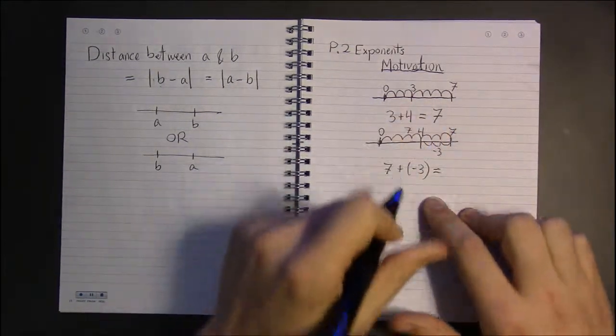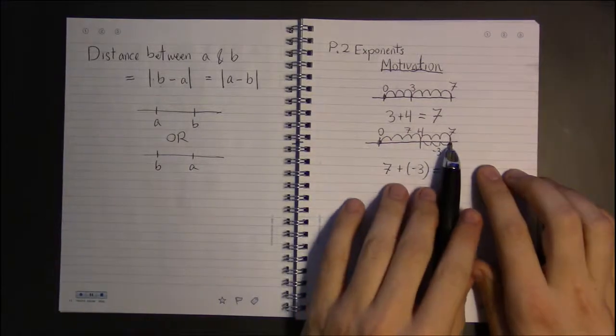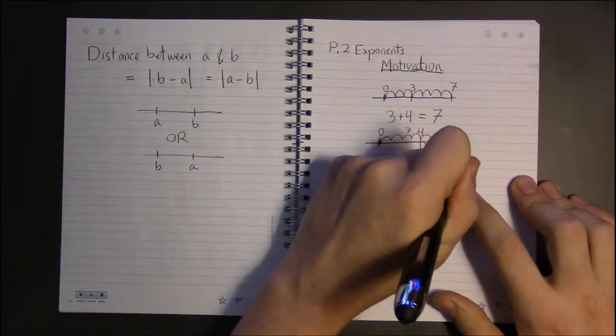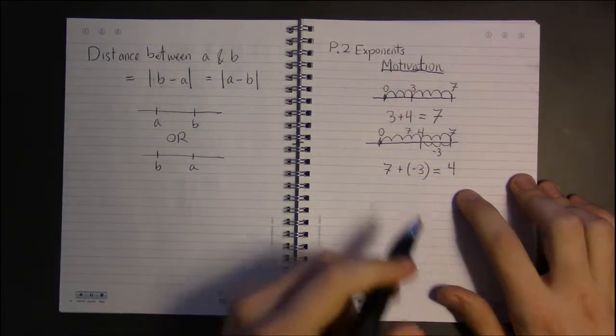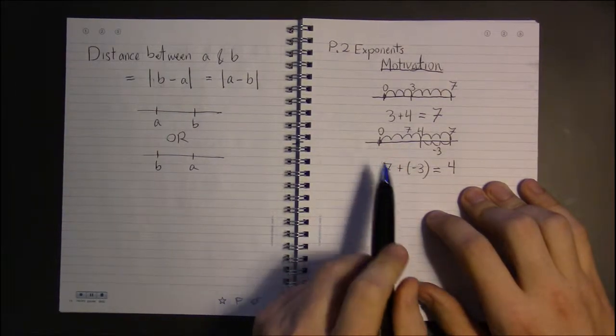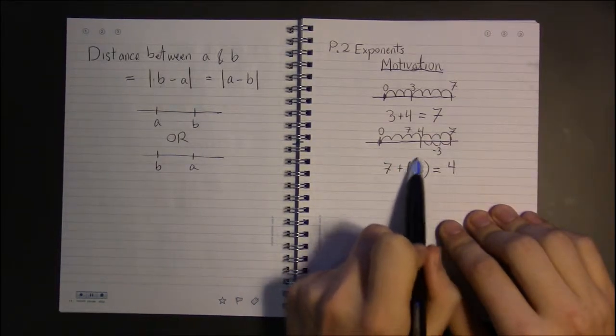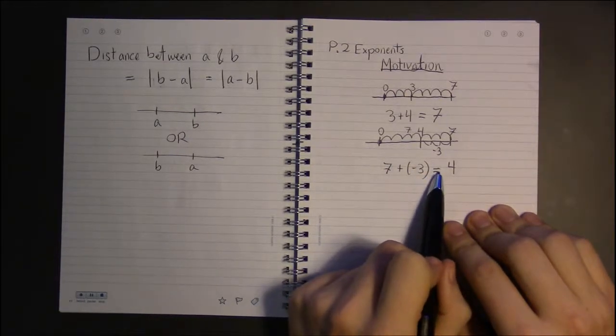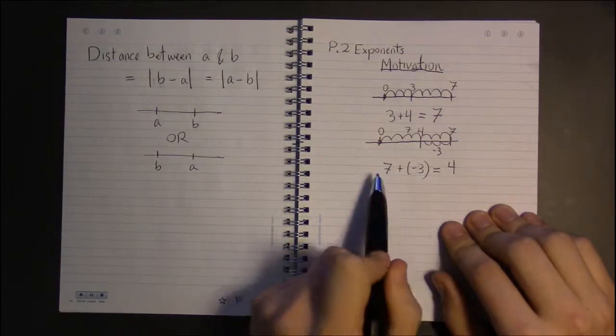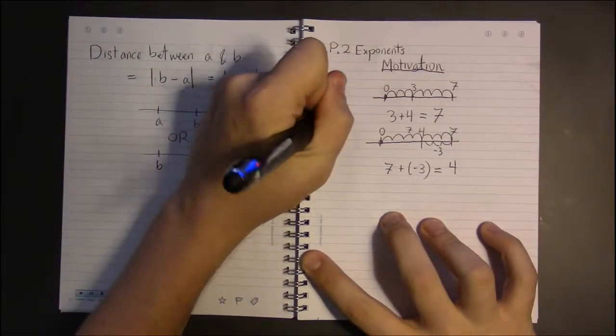So, moving from 0, 7 to the right, 3 to the left, you end up at 4. So, all addition really is, is just kind of concatenation. Start at 0, move according to the first number, and then move according to the second number, whether that be left or right, corresponding to left if it's negative, and right if the number is positive. So, that's addition.